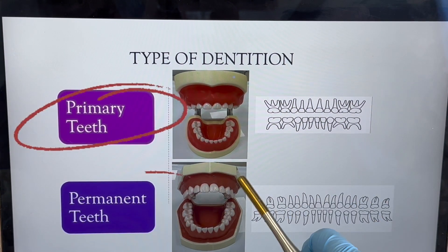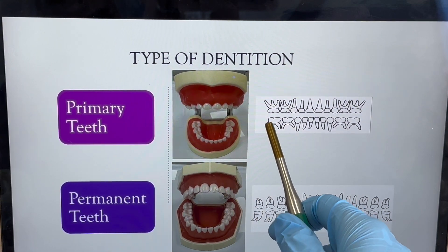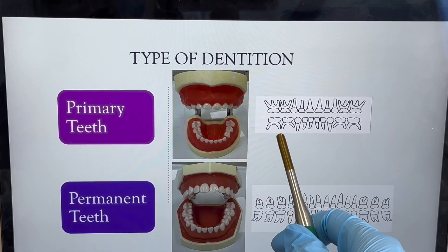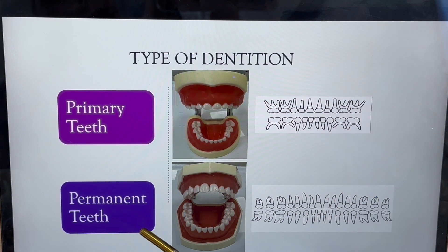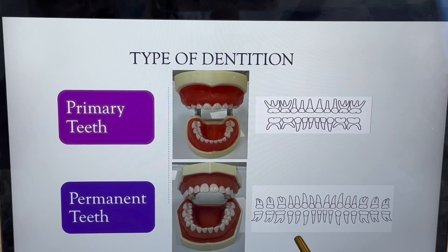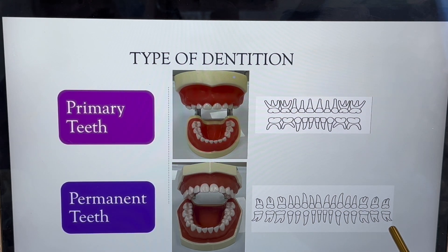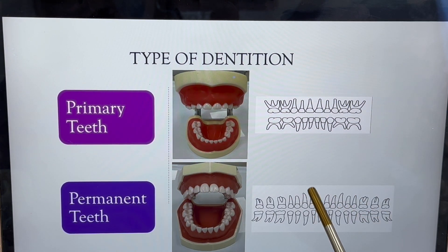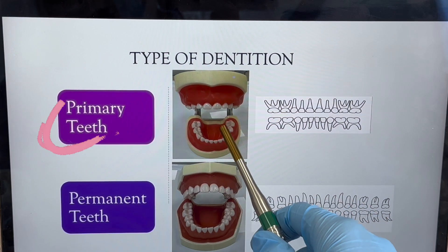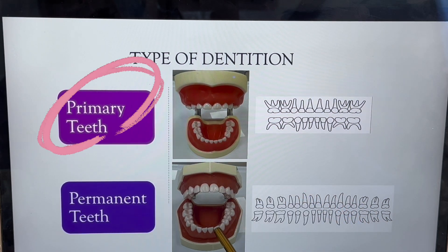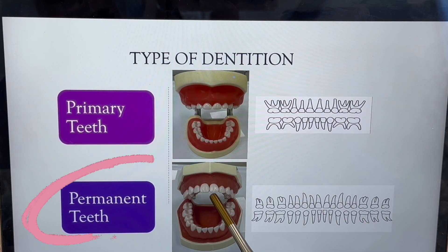A little bit of review: in the primary dentition, we only have 20 teeth in total — 10 on the top and 10 on the bottom. In the permanent dentition, we have 32 teeth in total — 16 on the top and 16 on the bottom. The first thing we need to identify is if the tooth we want to name is a primary tooth or a permanent tooth.